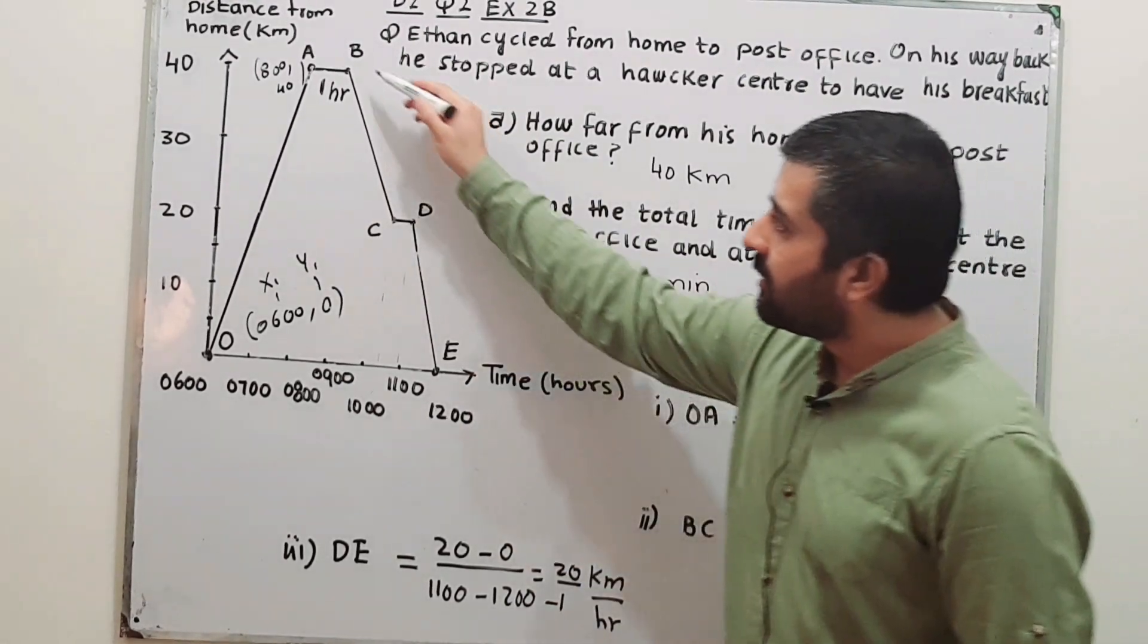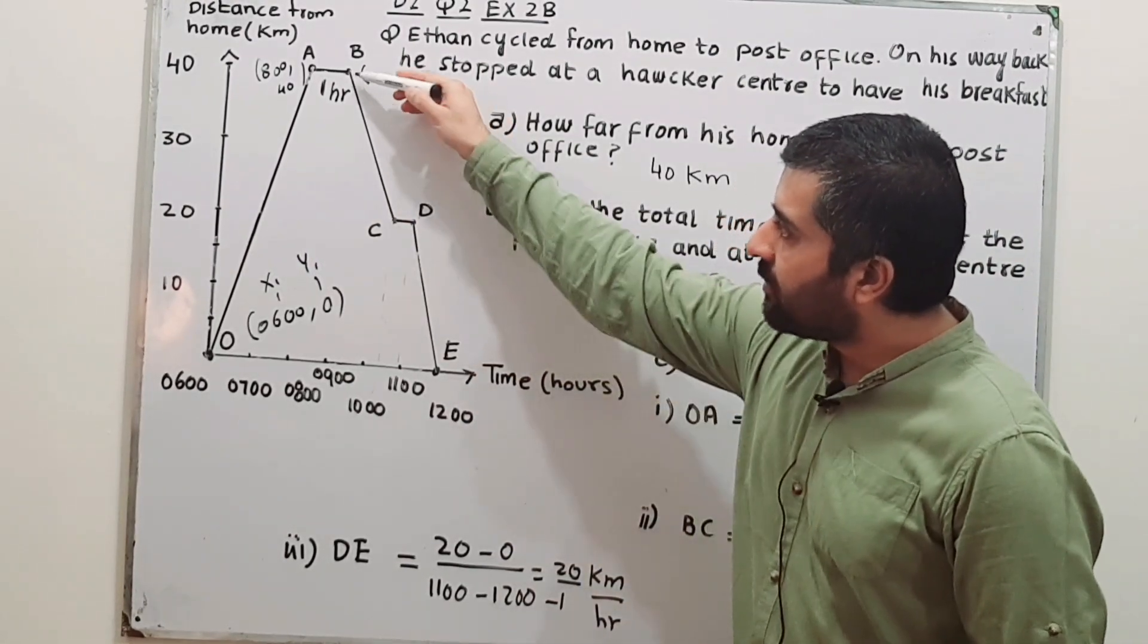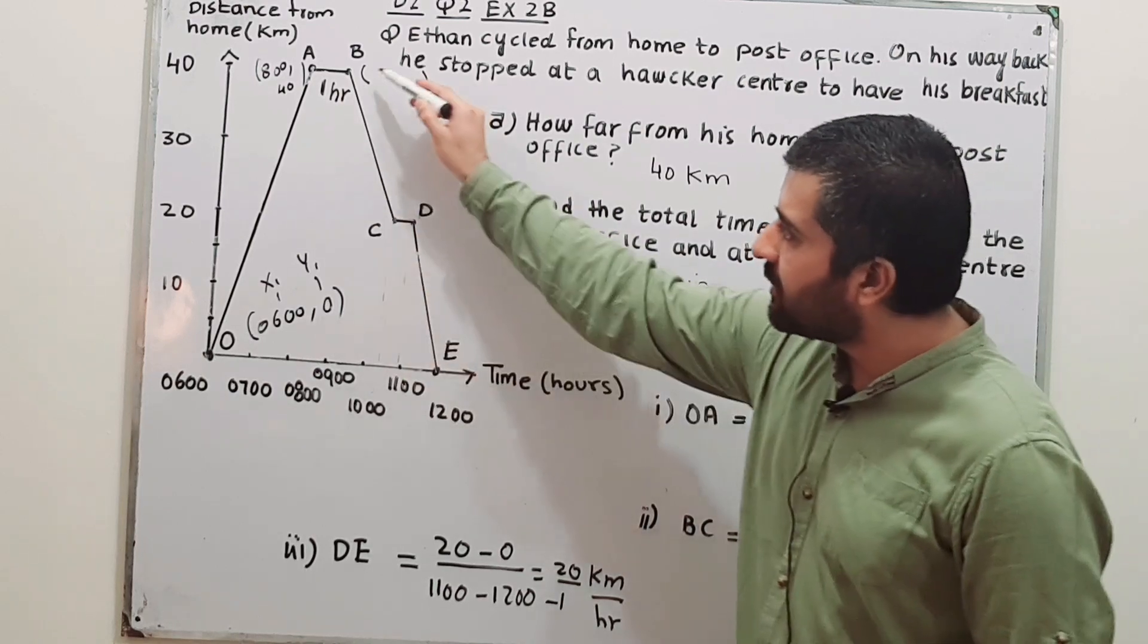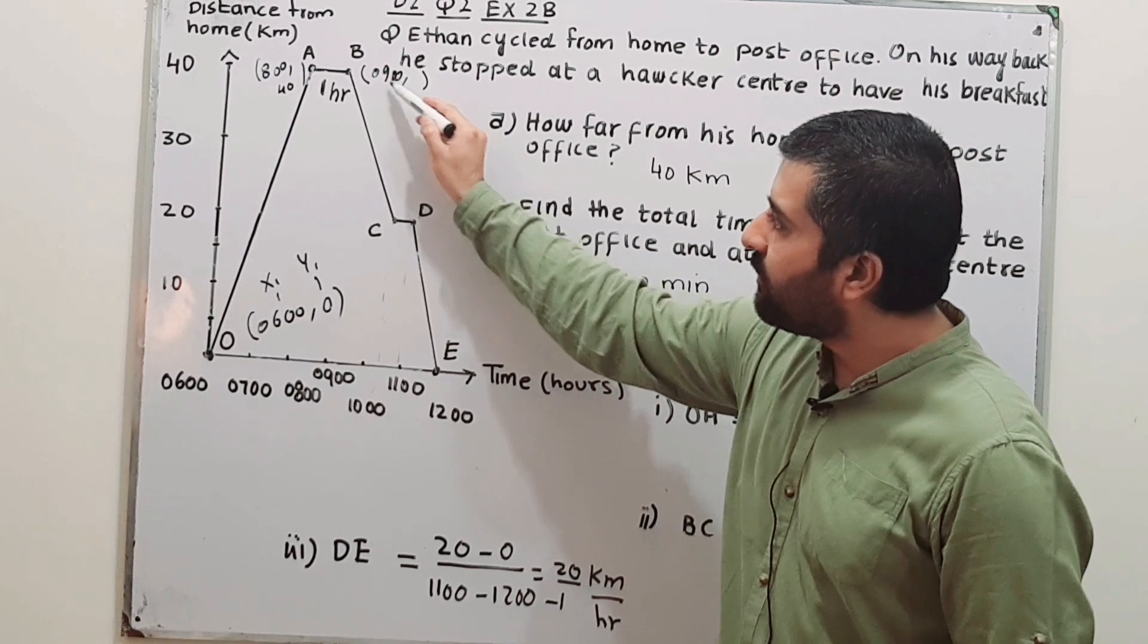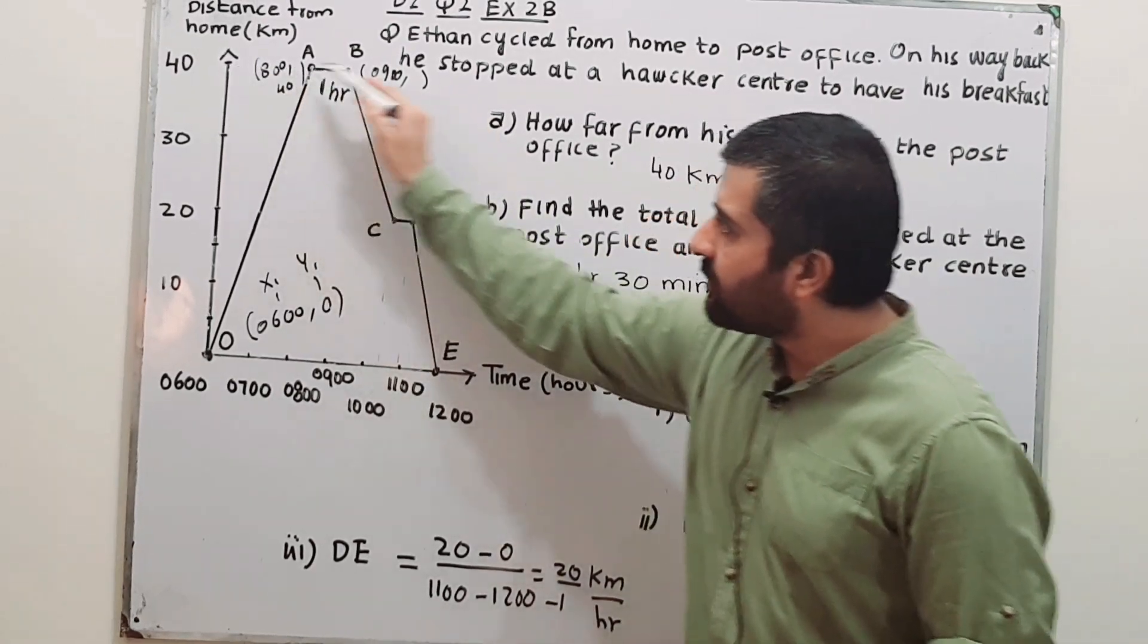Write down the coordinates of B. The value for x is 0900 hours, and value for y is 40.